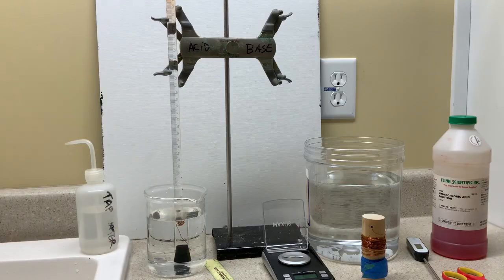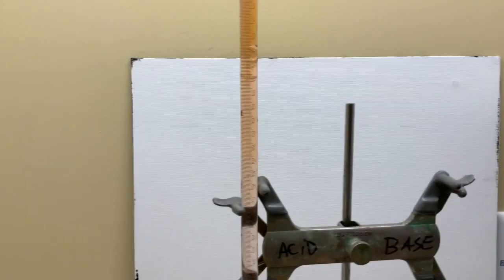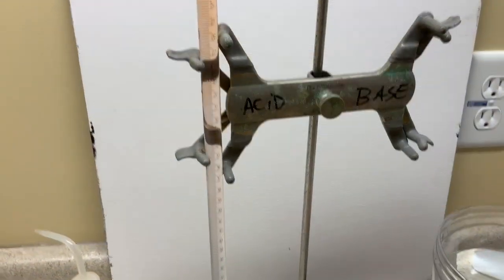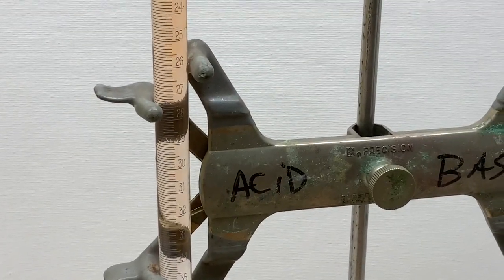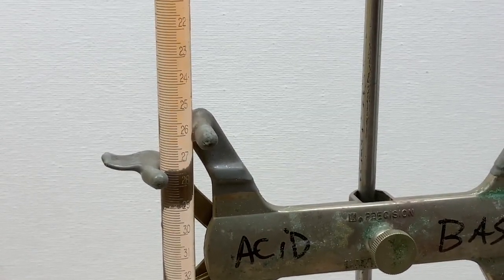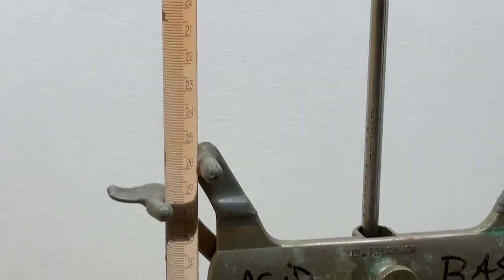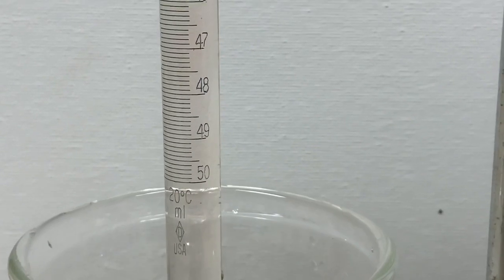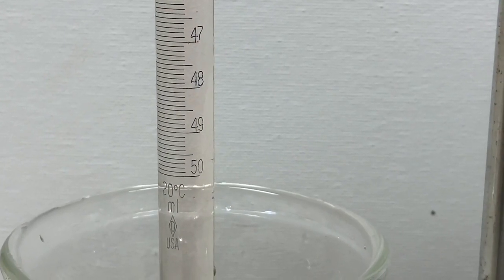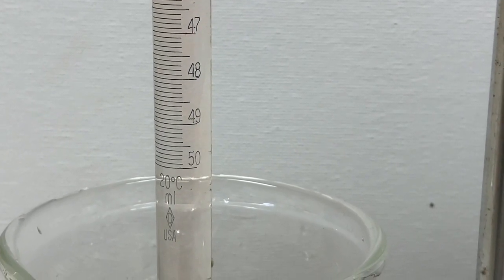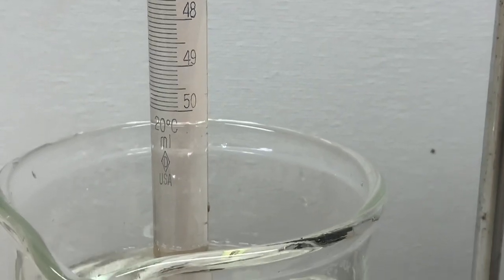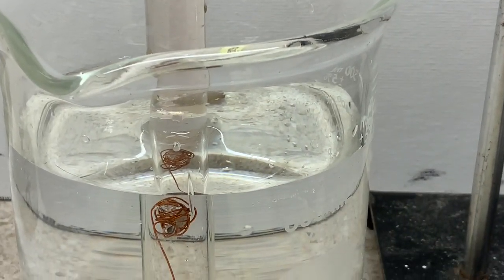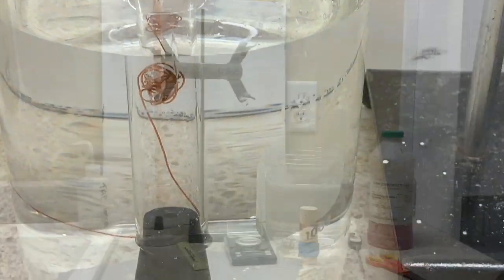I think if you look closely you should be able to see the acid as it drifts down through the water to make its way towards the magnesium at the bottom. Again, that acid slowly making its way down towards the magnesium at the bottom. You can just see it wiggling the solution there. And it looks like the reaction is just starting; some bubbles just starting to form.